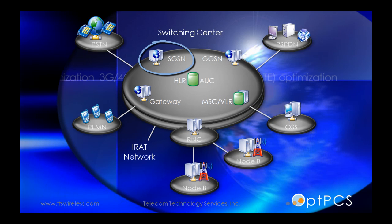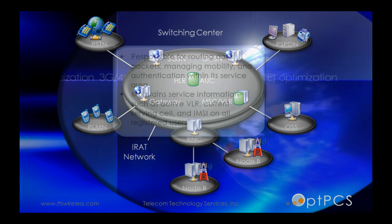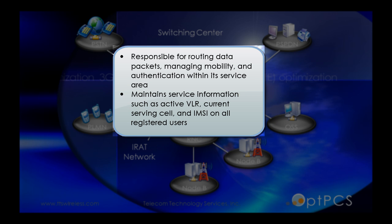The Serving GPRS Support Node, or SGSN, is responsible for routing data packets, managing mobility, and authentication within its service area. It maintains service information such as active VLR, current serving cell, and MZ on all registered users.